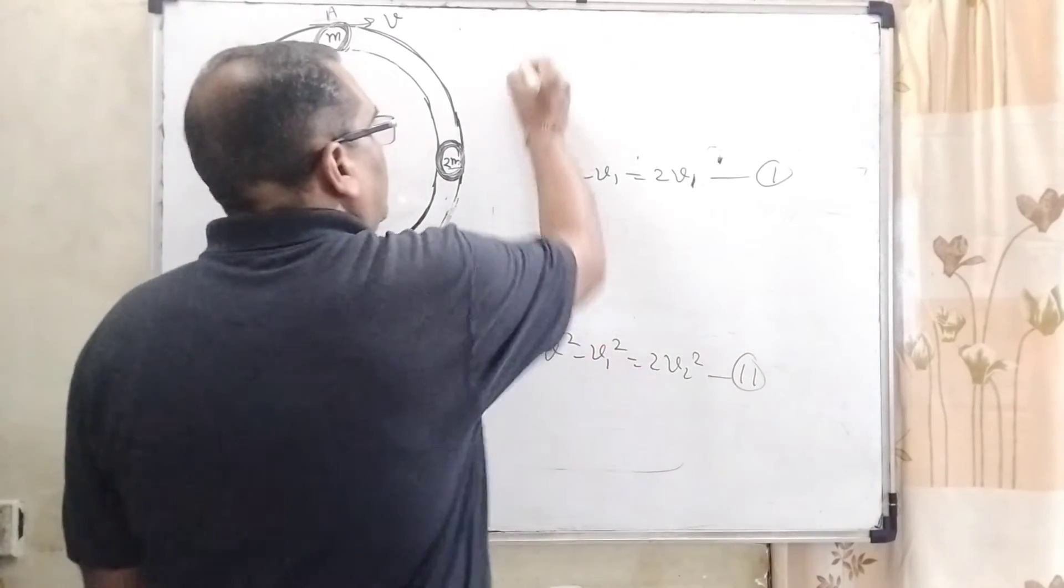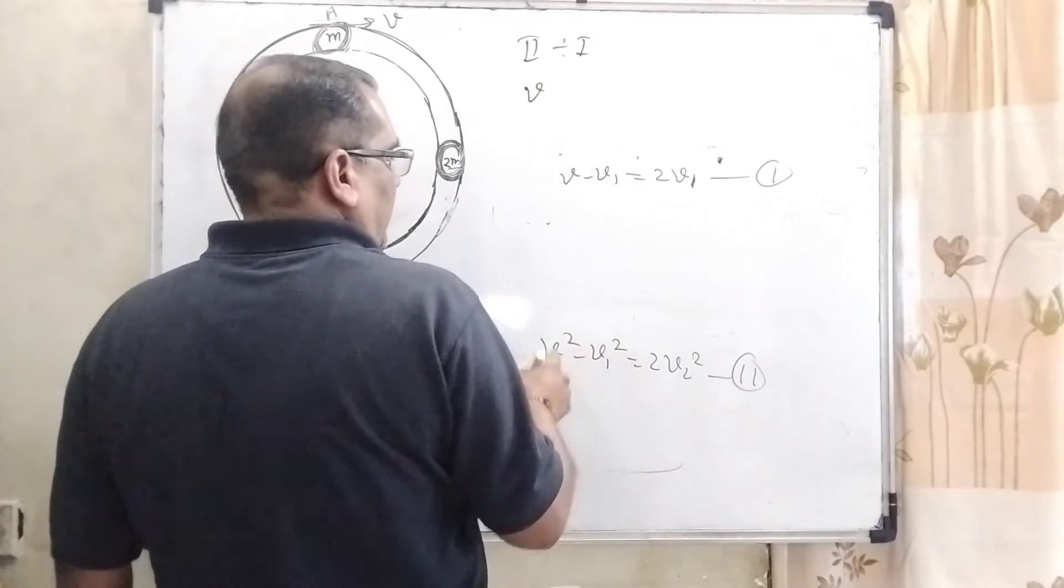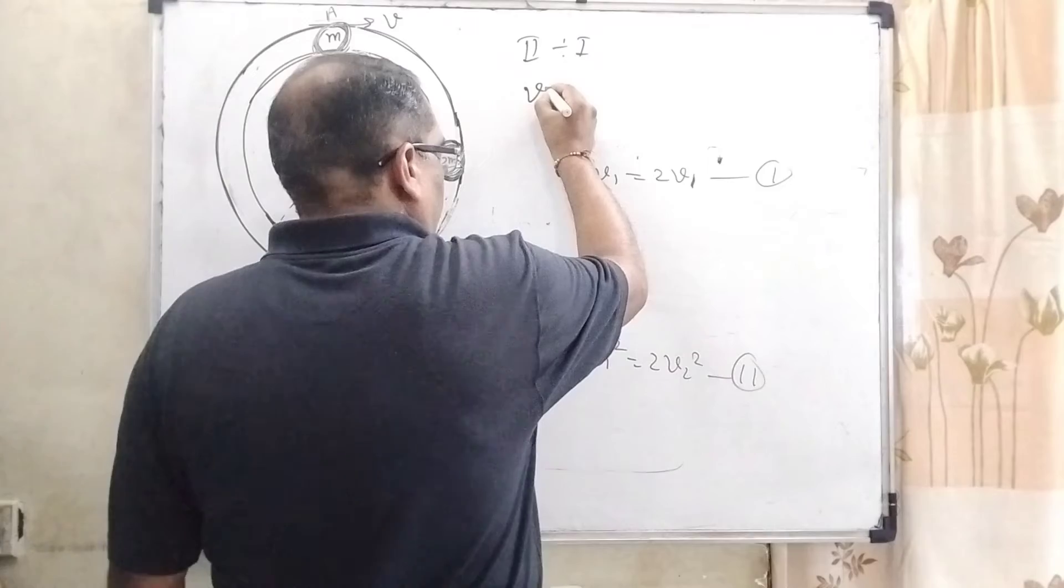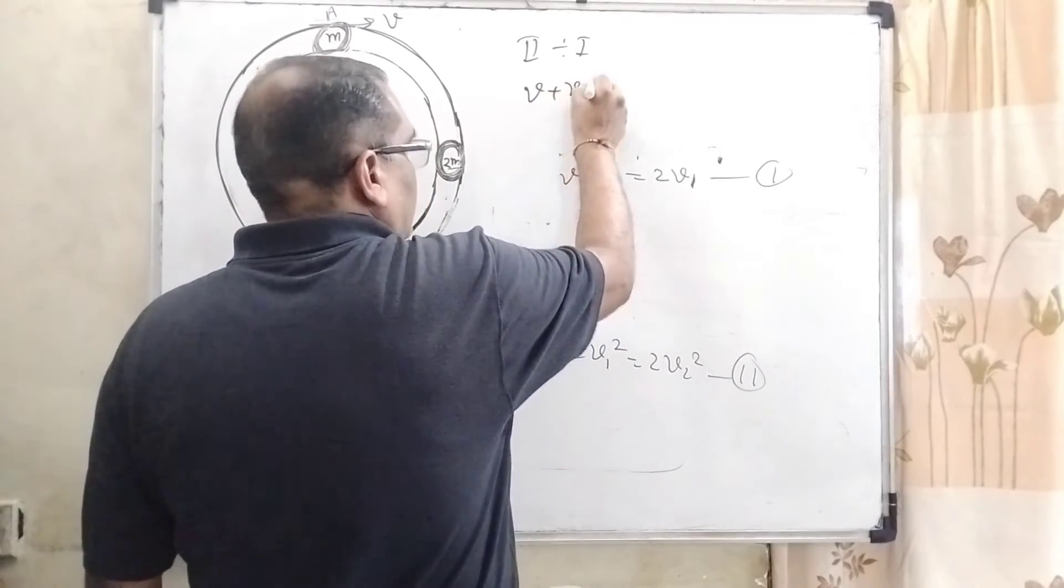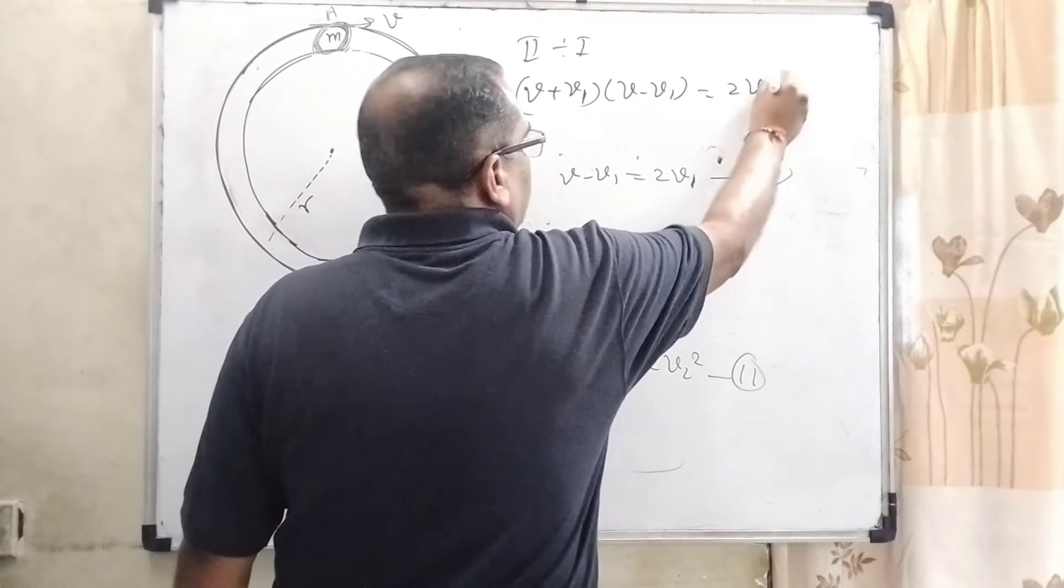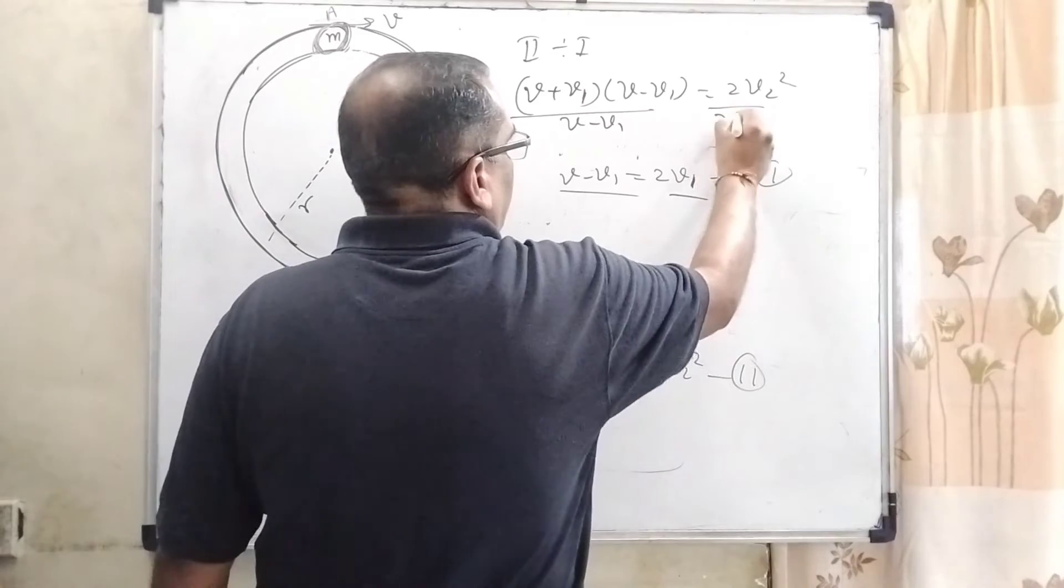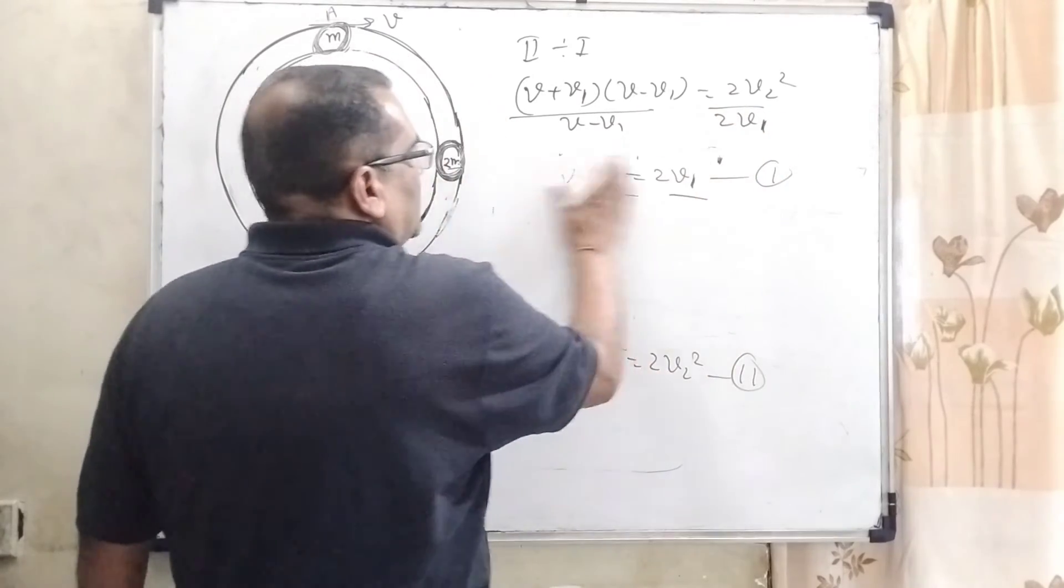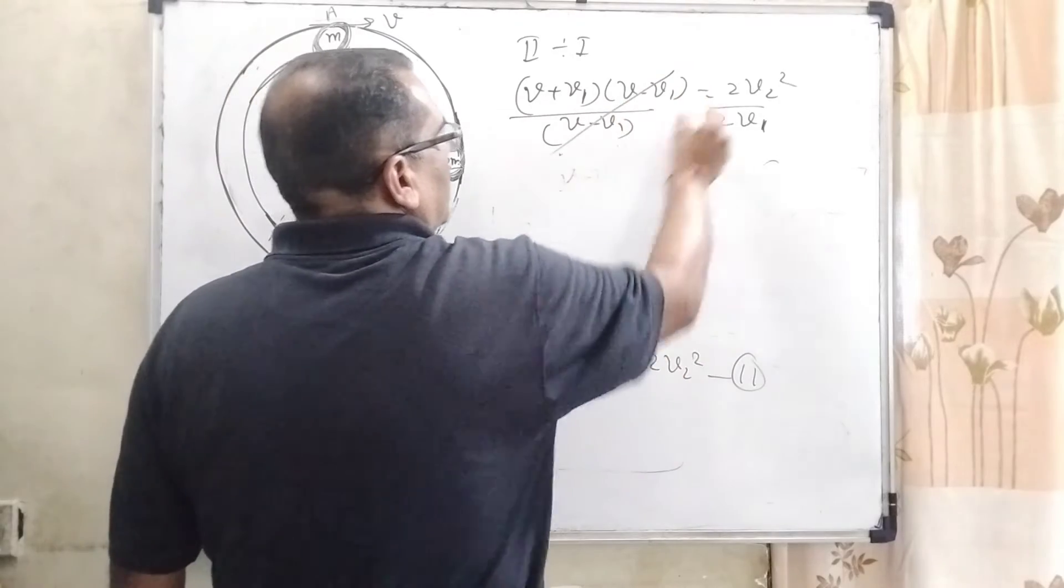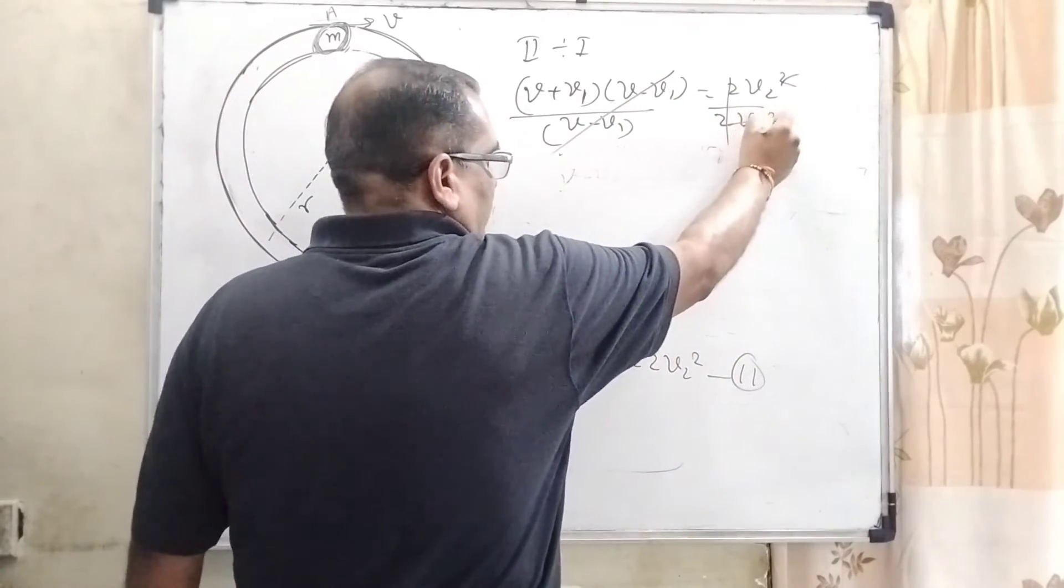Now second equation divided by first equation. So here v² - v1² identity can be used. So therefore, (v + v1)(v - v1) = 2v2² divided by this equation (v - v1)/(2v2). So now here v - v1 cancels out. Here v2 cancels out.